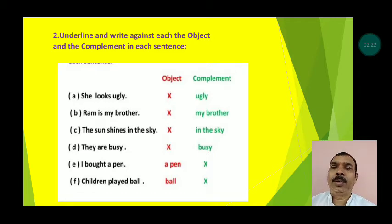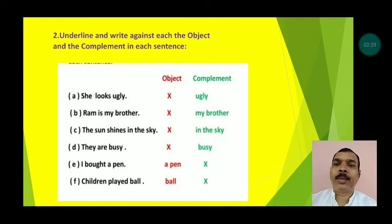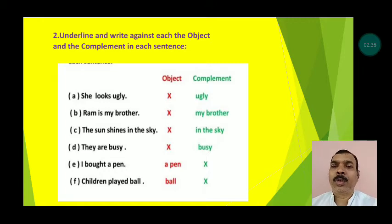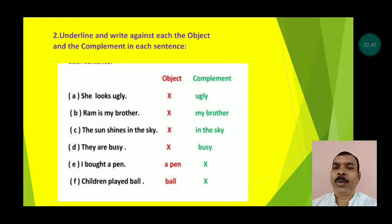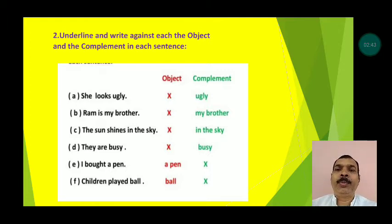'Ram is my brother' — no object; complement is 'my brother'. 'The sun shines in the sky' — no object; complement is 'in the sky'. 'They are busy' — no object; complement is 'busy'.